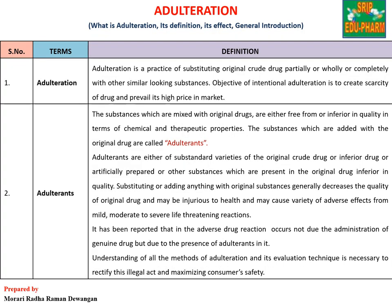What is adulteration? Adulteration is a practice of substituting the original crude drug, partially or wholly and completely, with other similar-looking substances. It is a practice in which you mix with an original drug, or you use a substituting drug to sell. Intentional adulteration creates scarcity of a particular drug in the market to charge a high price.